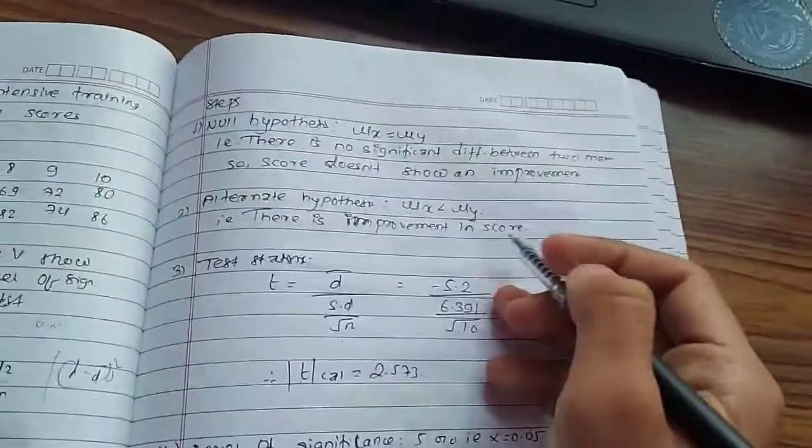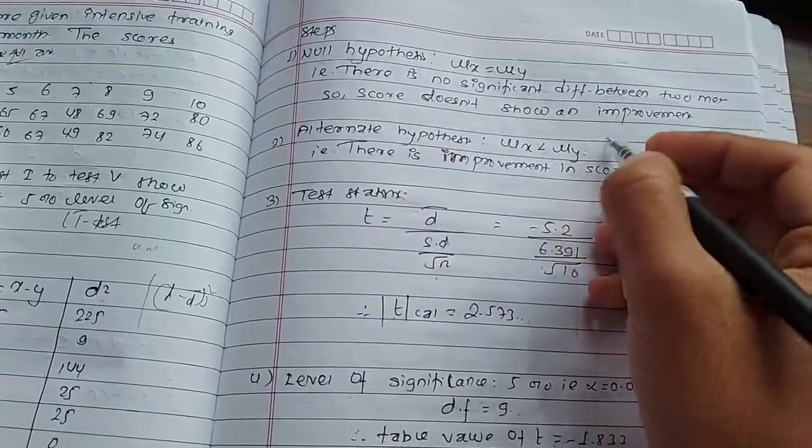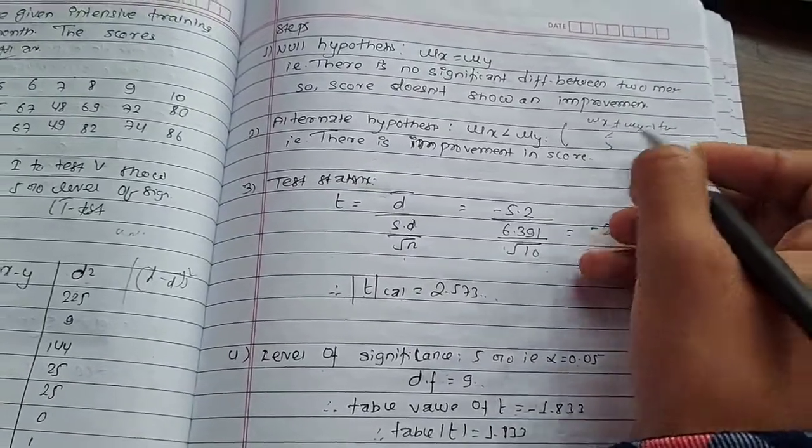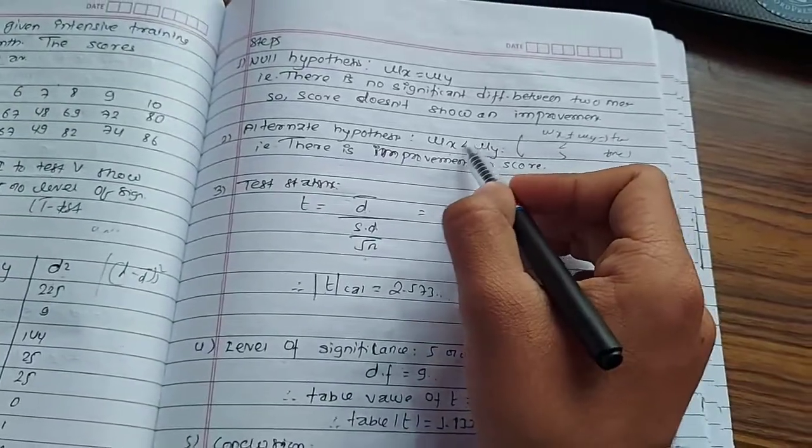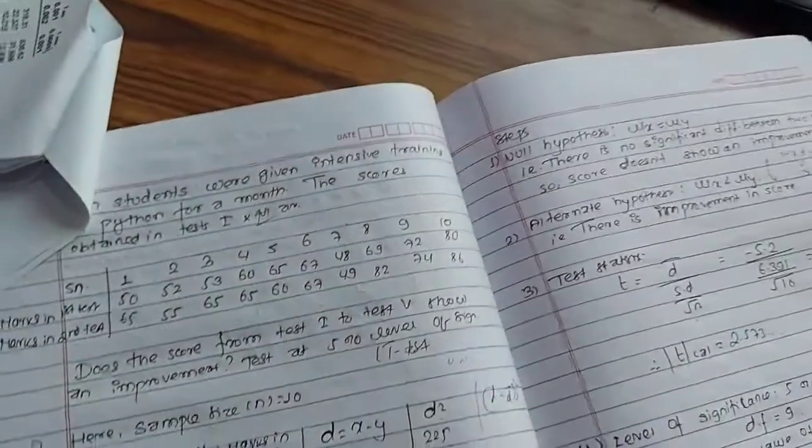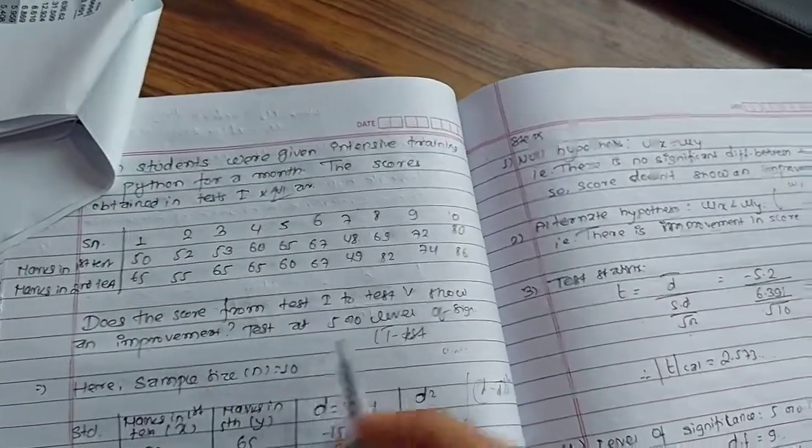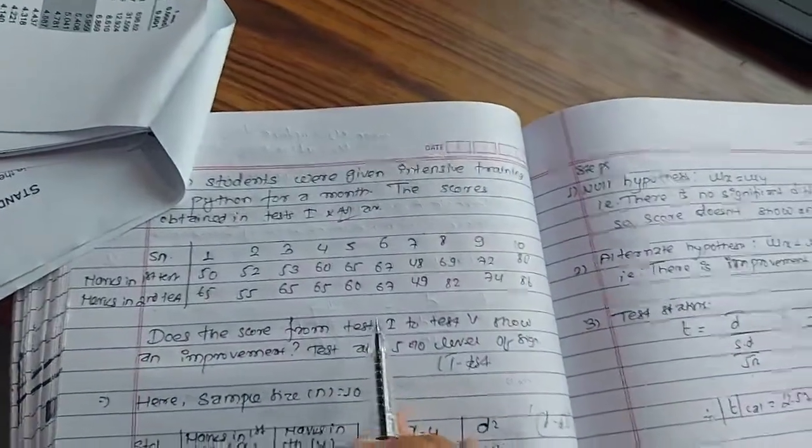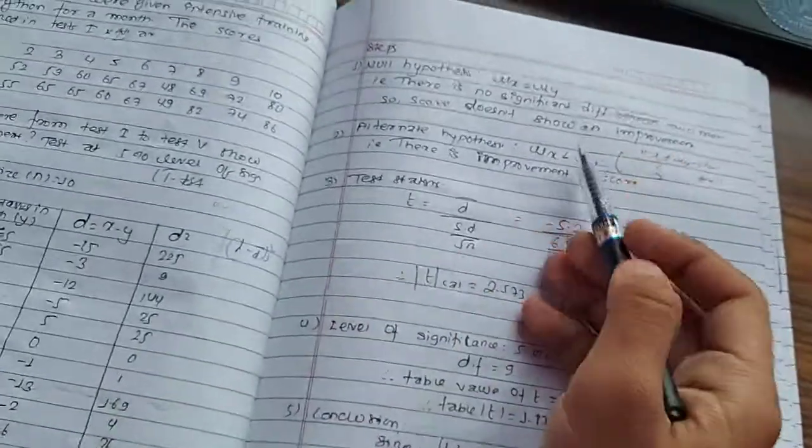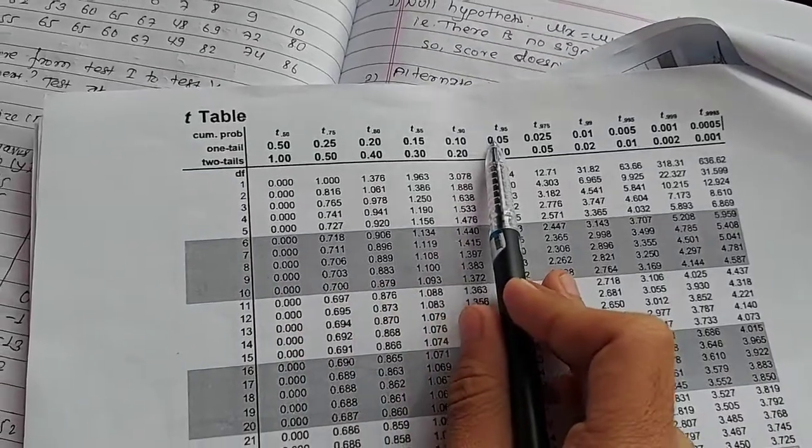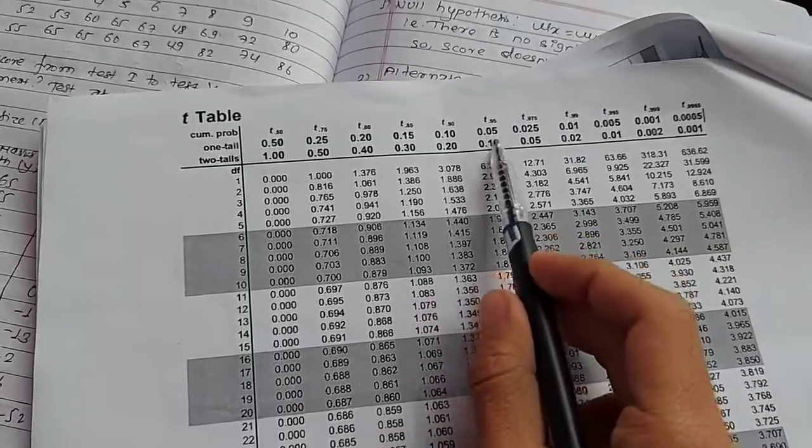Table value of t. One-tailed test. Alternative hypothesis was mu X does not equal mu Y if two-tailed, or less than or greater than if one-tailed. This is one-tailed. One-tailed table, 0.05 level of significance and degree of freedom 9, the value is 1.833.